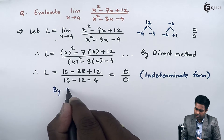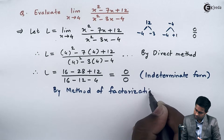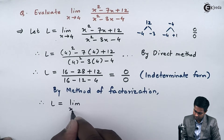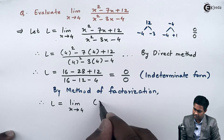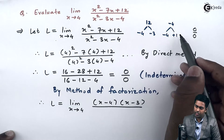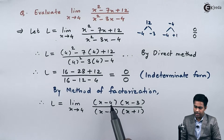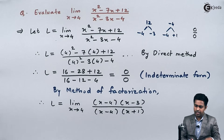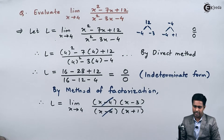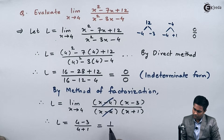By the method of factorization, the factors of the numerator are (x minus 4) and (x minus 3). Similarly, in the denominator the factors are (x minus 4) and (x plus 1). Since x minus 4 is a common factor in both numerator and denominator, we cancel it, leaving (x minus 3) over (x plus 1). Applying the direct method again, we substitute x = 4 to get 4 minus 3 upon 4 plus 1, which equals 1 upon 5.